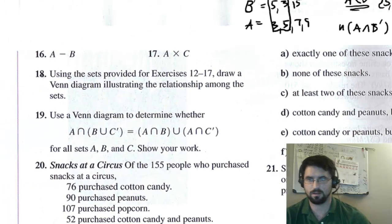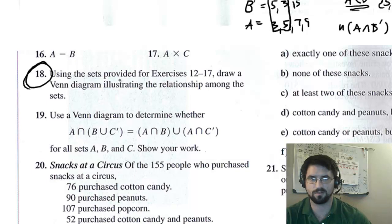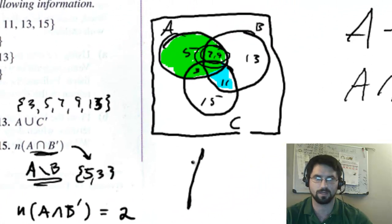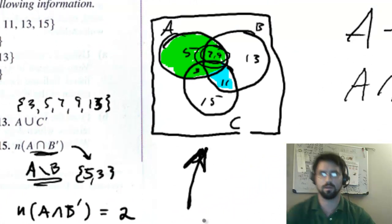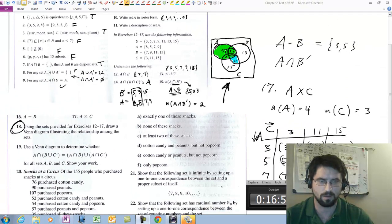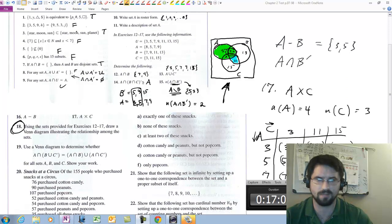And the last problem here, number 18, says... I'm using the sets provided for 12 through 17 draw a Venn diagram illustrating the relationship. That's what I did right here. So we're done with 12 to 18. So let me see how much time I've taken. Alright, we'll call it quits there, and I'll do the second half in another video. Alright, and buh-bye.